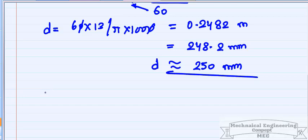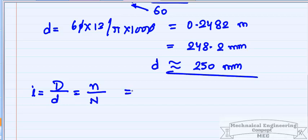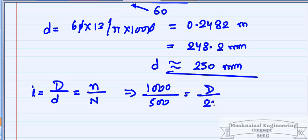Next, to calculate capital D, we use the speed ratio formula: small n / capital N = capital D / small d. With small n = 1000, capital N = 500, and small d = 250 mm, capital D works out to 500 mm.